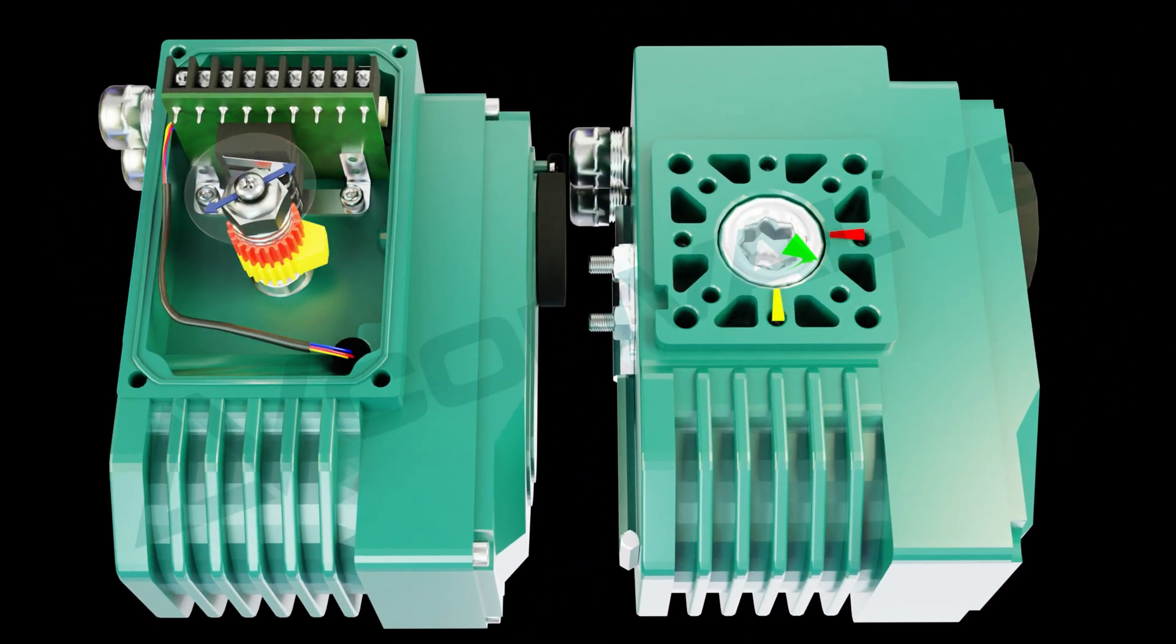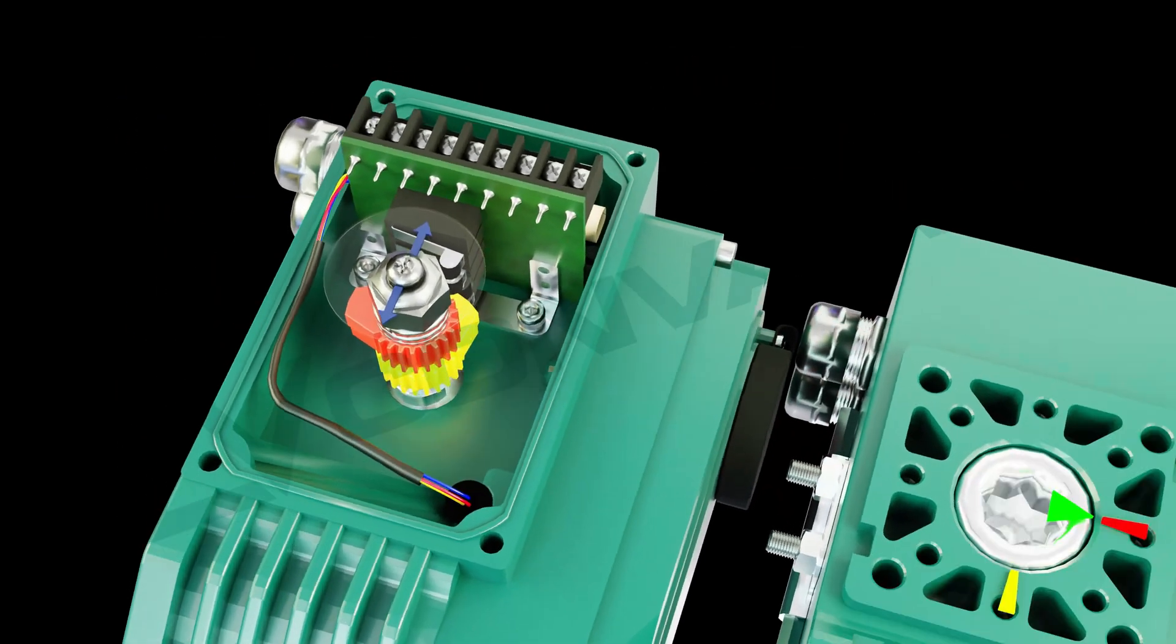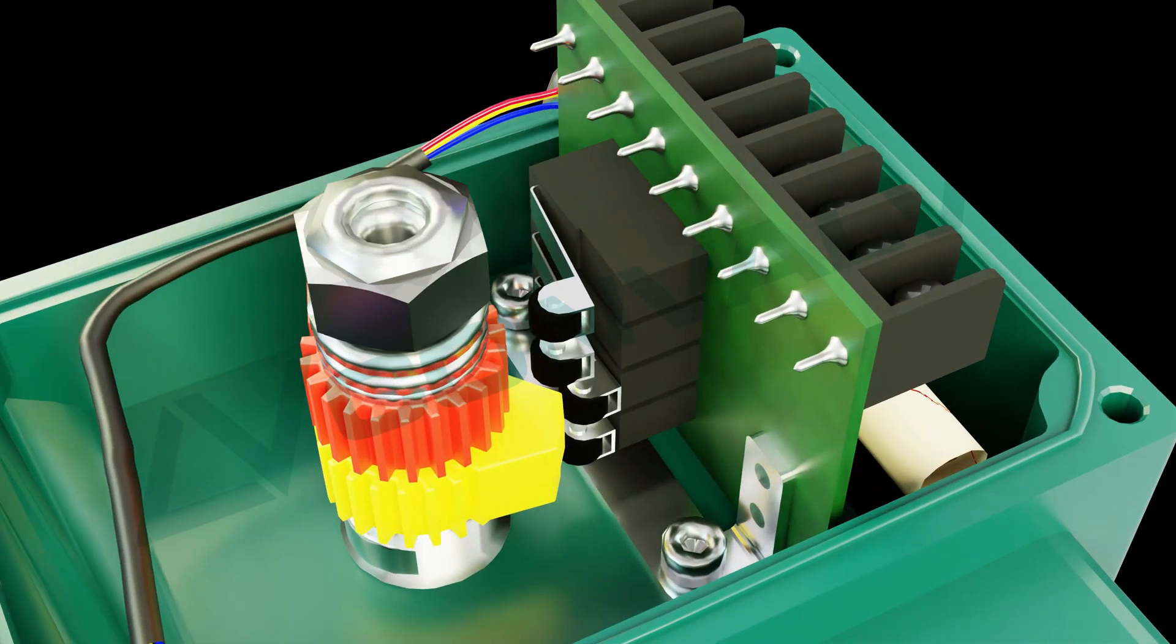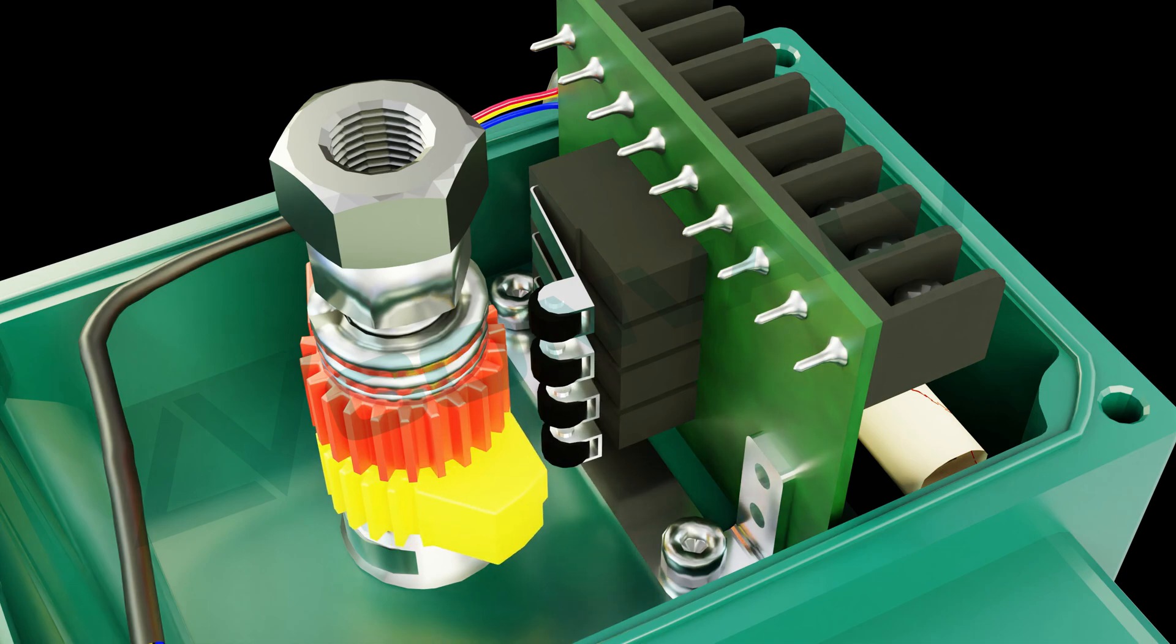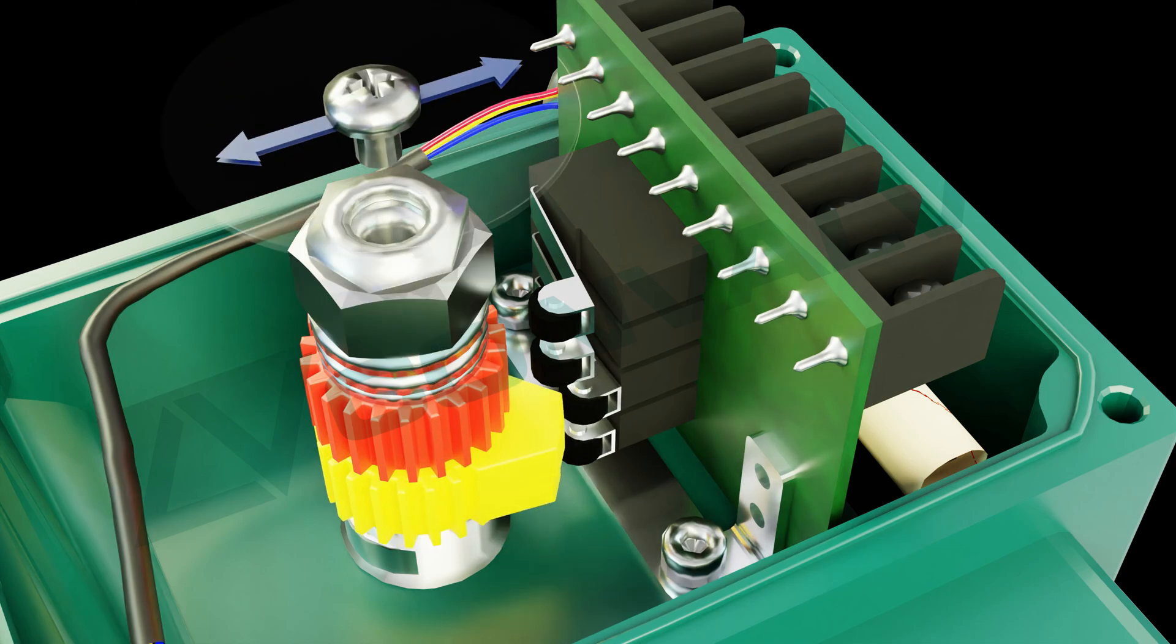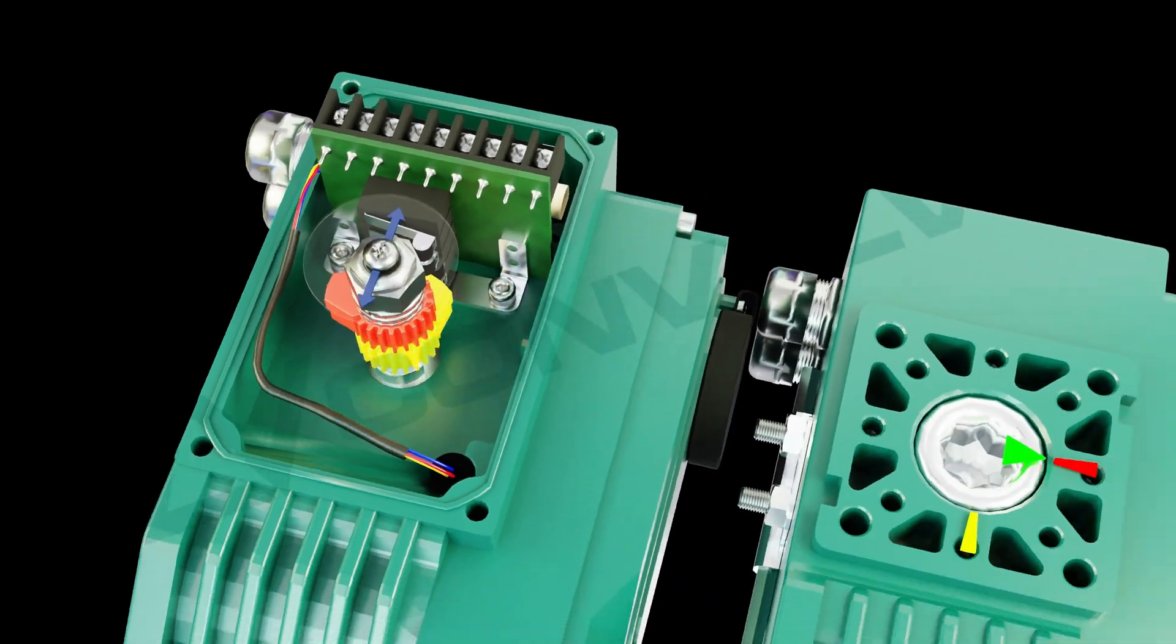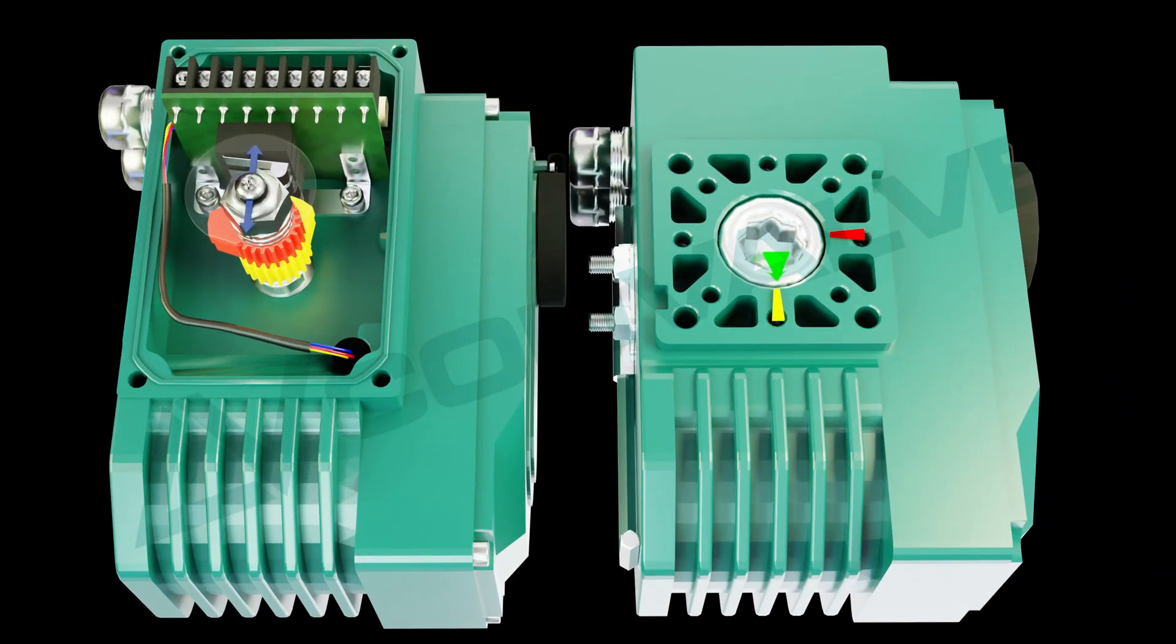Setting the full open position: manually adjust the electric actuator to its fully open position. Use a lever to loosen the nuts on the limit cam, rotate the limit cam until the corresponding open limit switch yellow is activated. Ensure that the actuator's connection to the valve is properly aligned and securely positioned. Once everything is correctly aligned, securely tighten the cam nut.